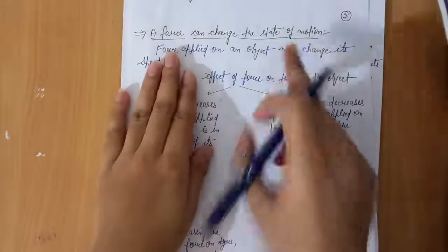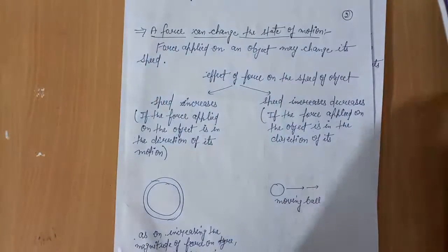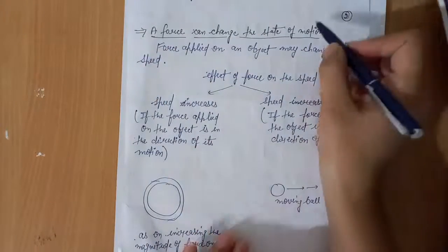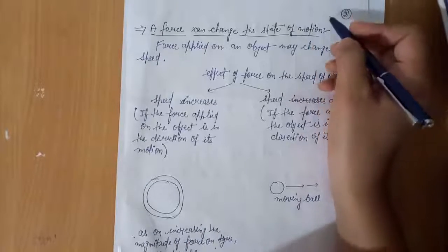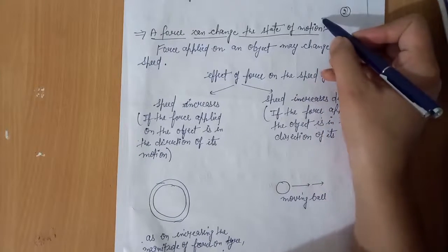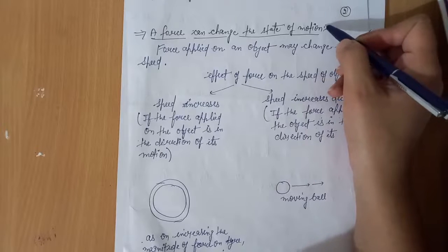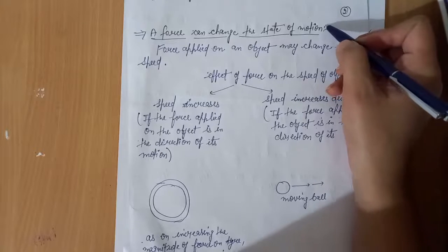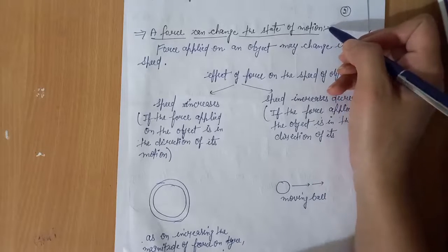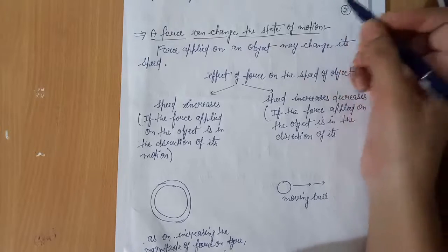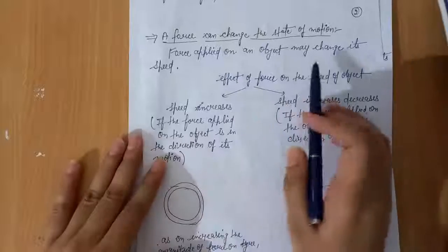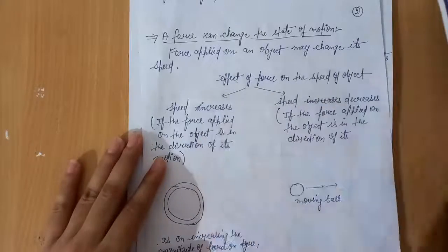A force can change the state of motion. The state of motion means the object may be at rest or in motion — both are its state of motion. For changing the state of motion of an object, force is applied on that object. Force applied on an object may also change its speed.